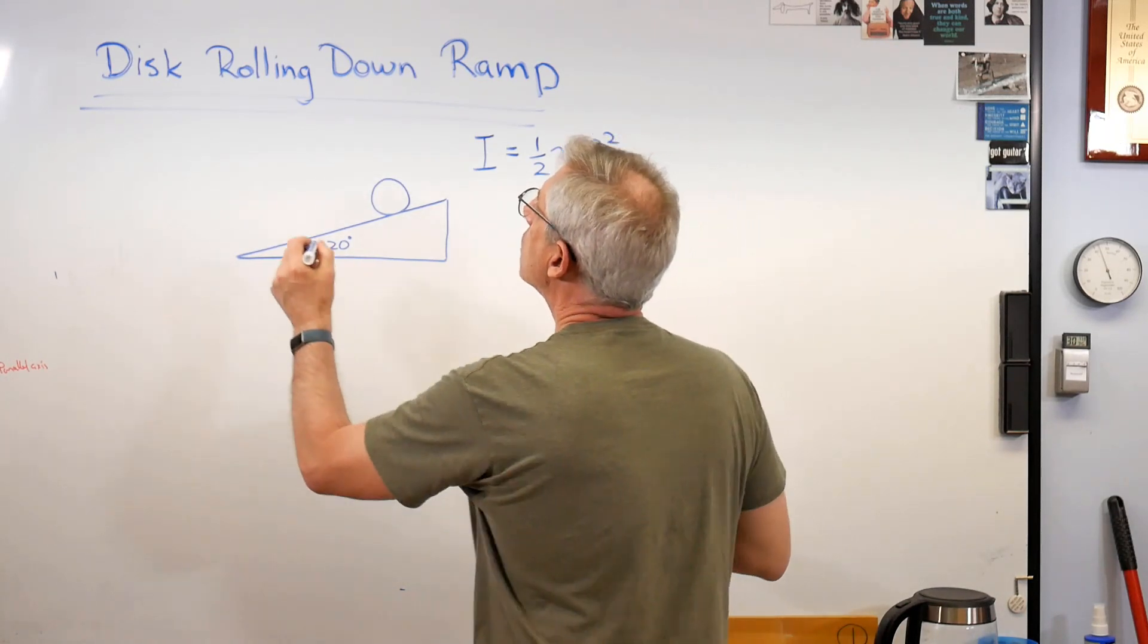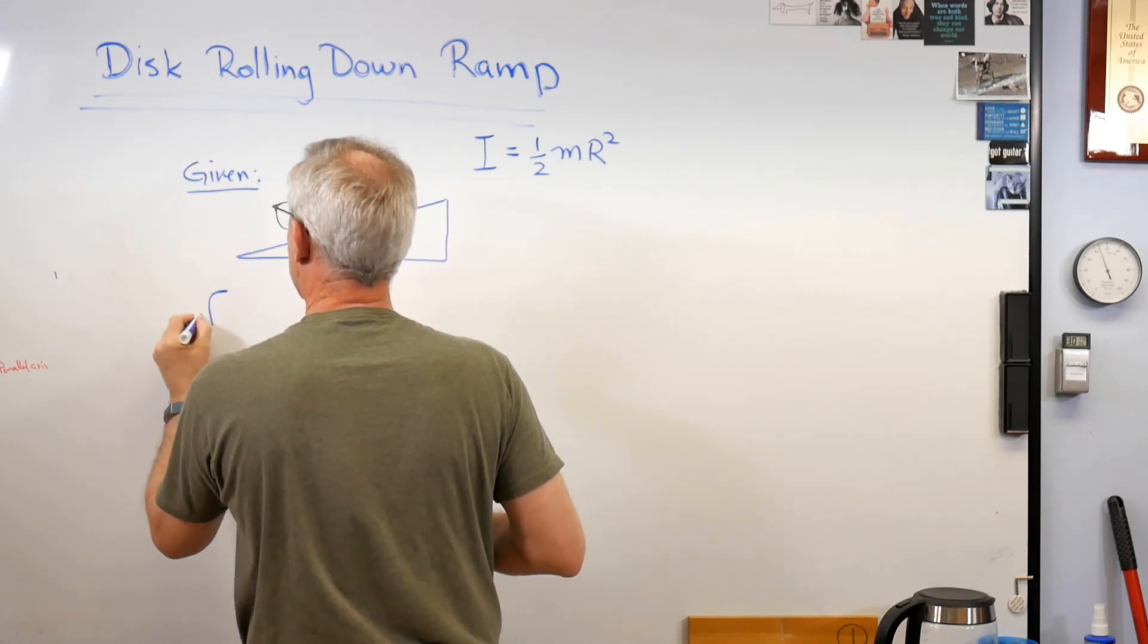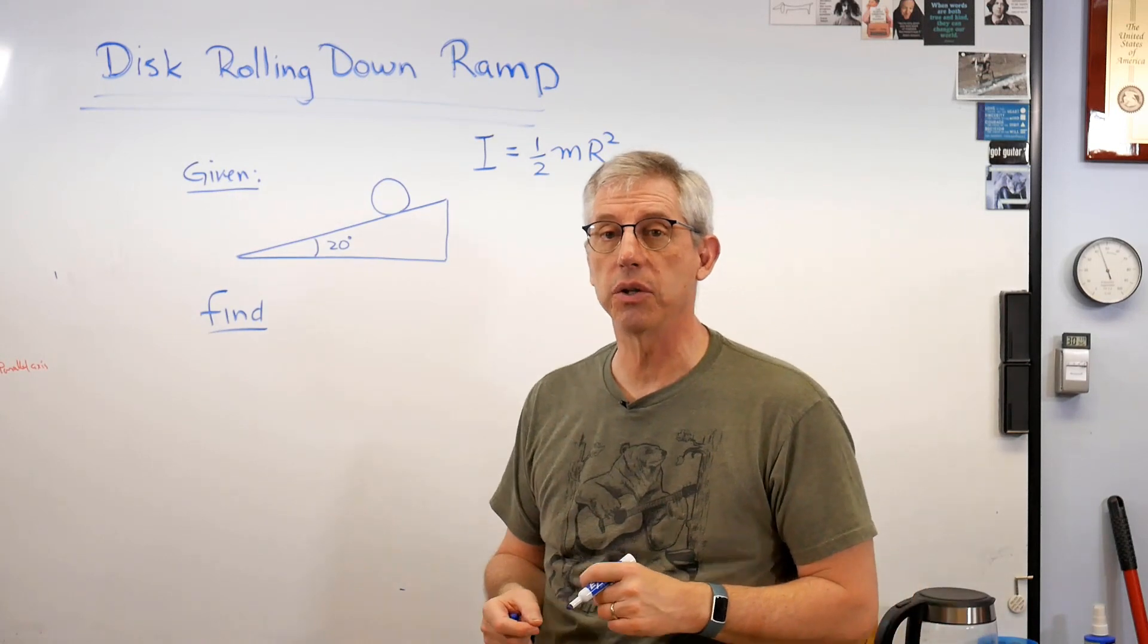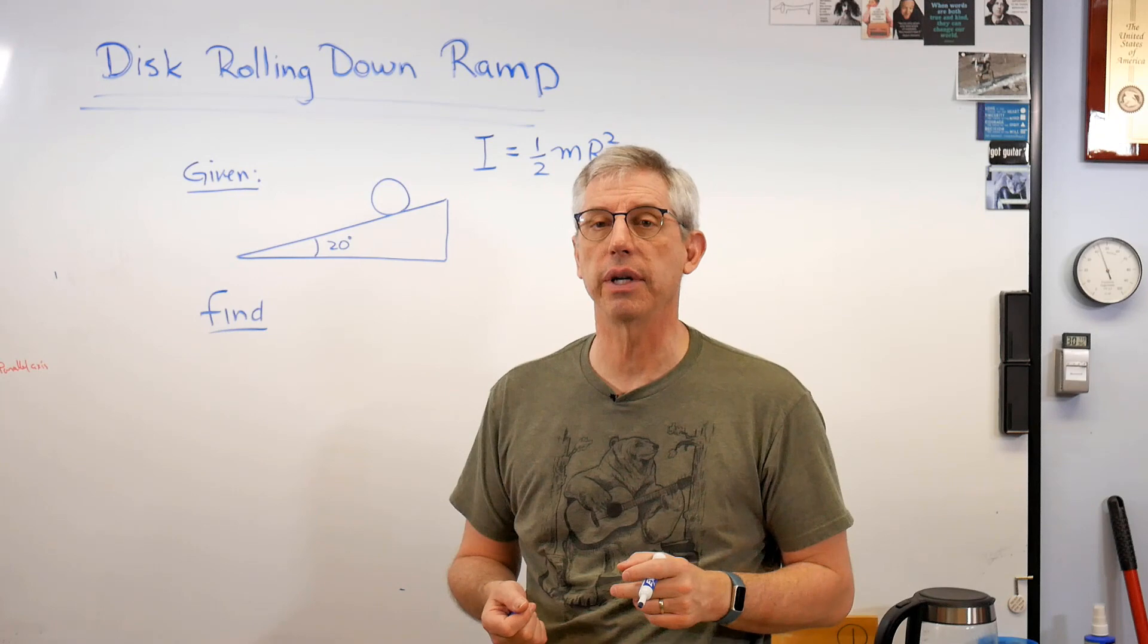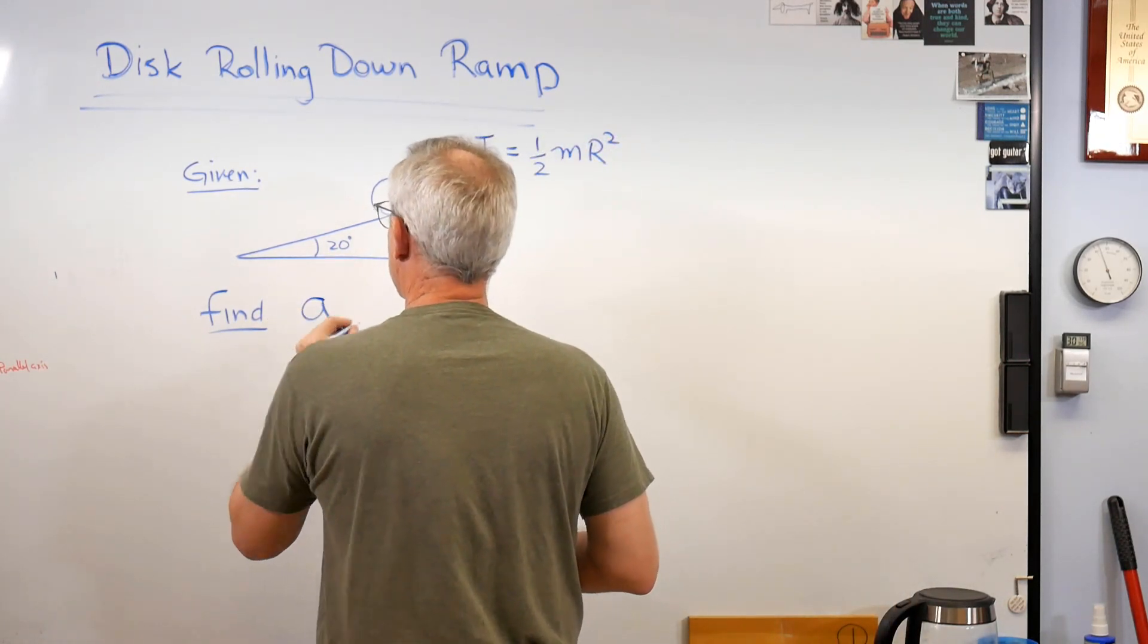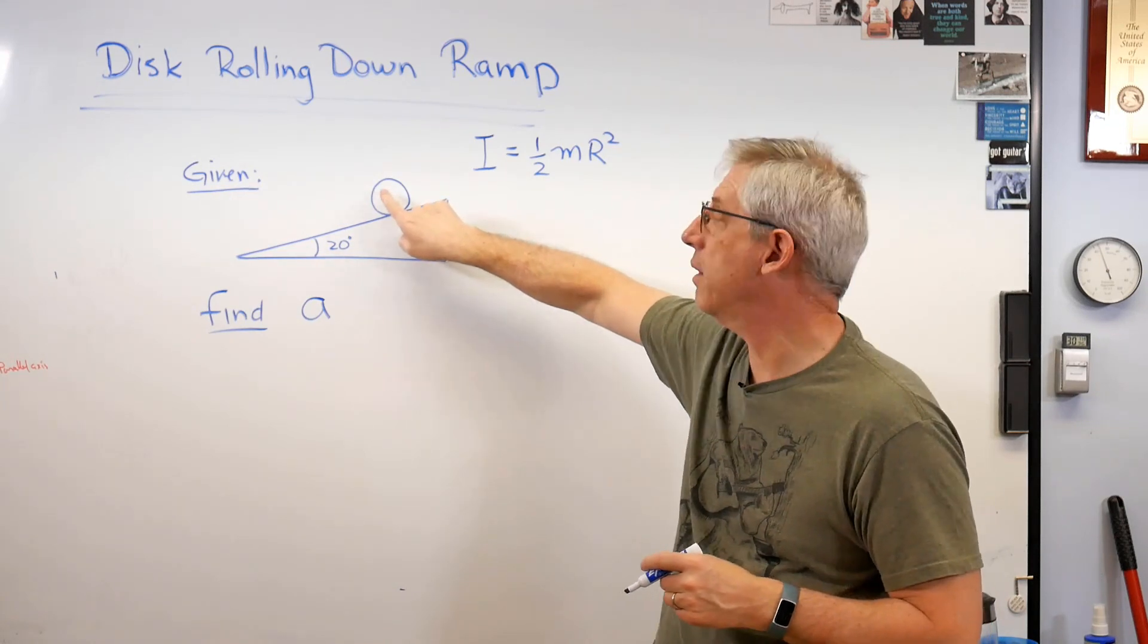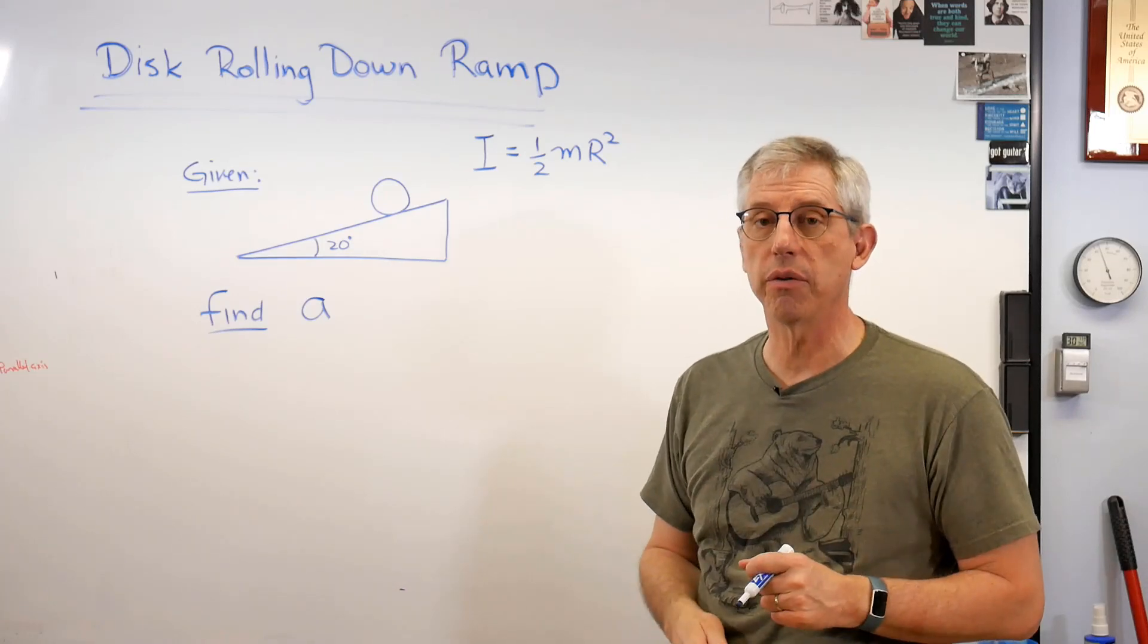This is the working diagram. So we're given this. What are we going to try to find? Let's try to find the acceleration down the ramp. Acceleration could be expressed two ways. It could be the rotational acceleration or it could be the linear acceleration. We have to pick one. Let's go for the linear acceleration. Find A. So the acceleration of the disc as it rolls down the ramp. And again, disc, wheel, barrel, it could be a lot of things. But it looks like that from the side. So this is the working diagram. That's step one of the recipe.